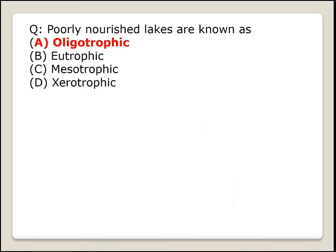First question: poorly nourished lakes are known as oligotrophic. Option A is the right answer.